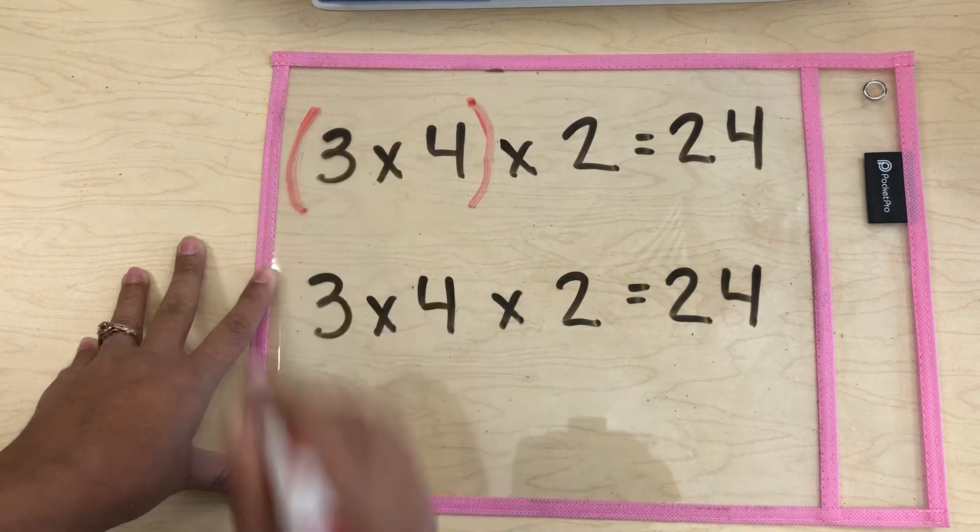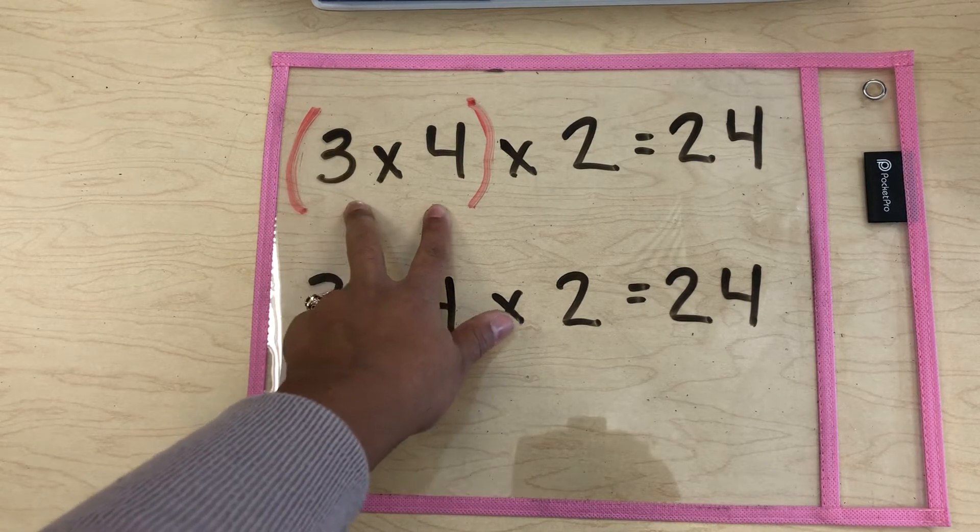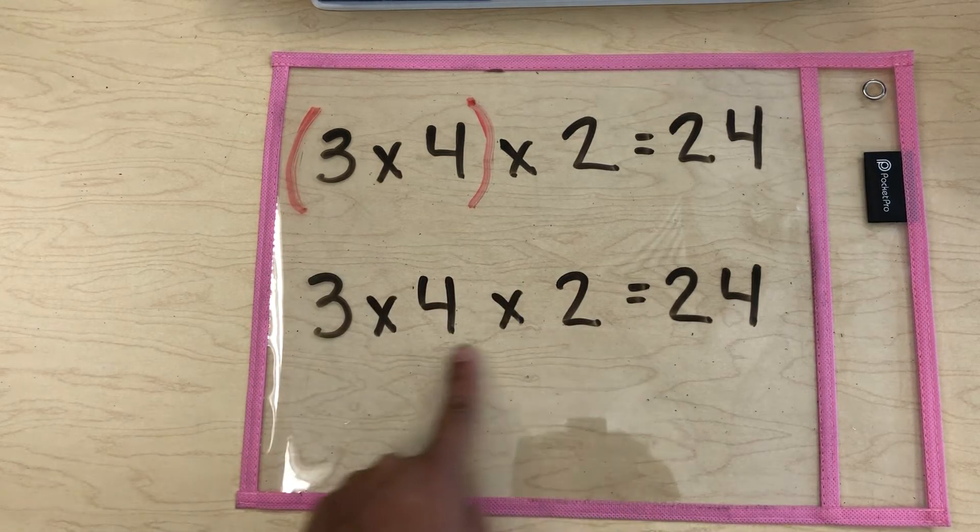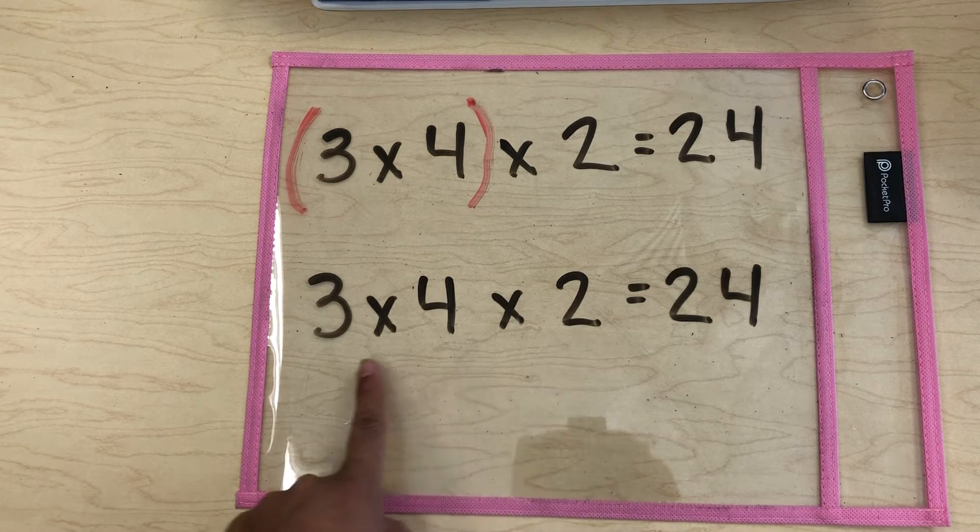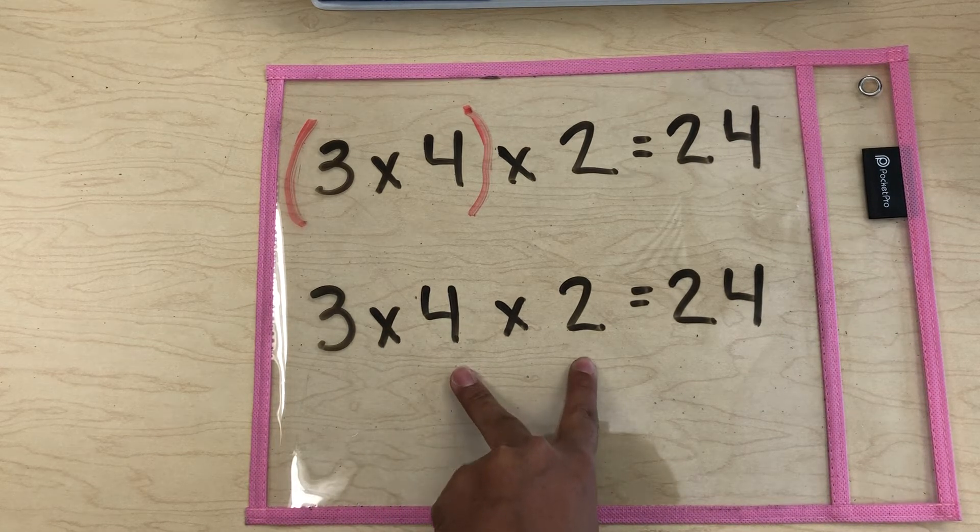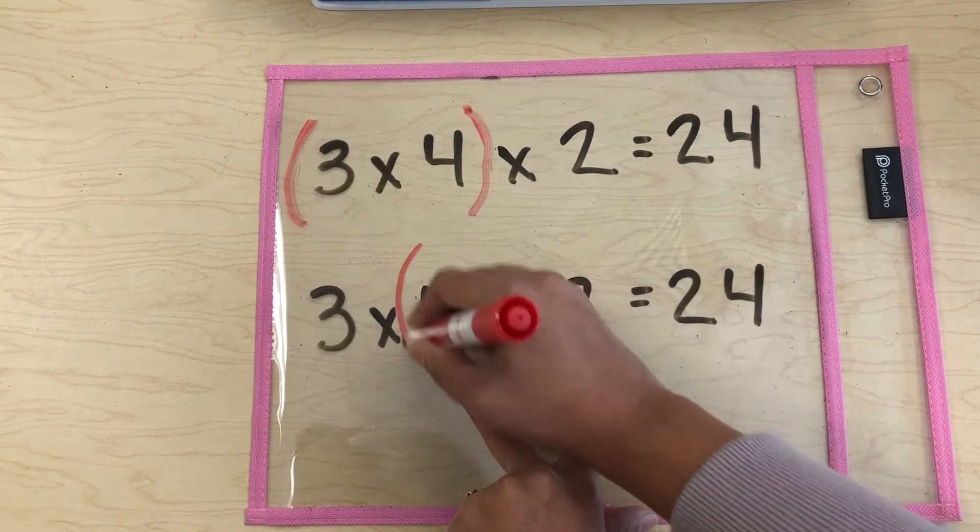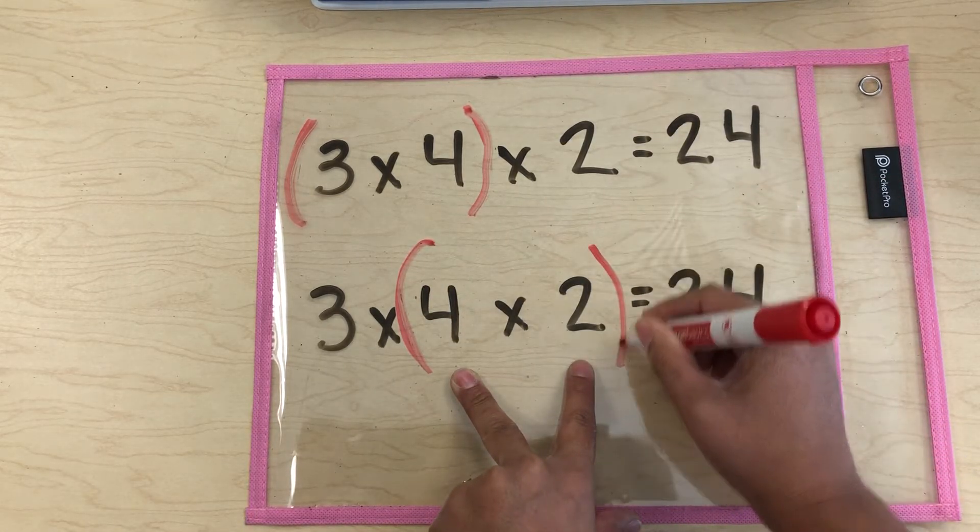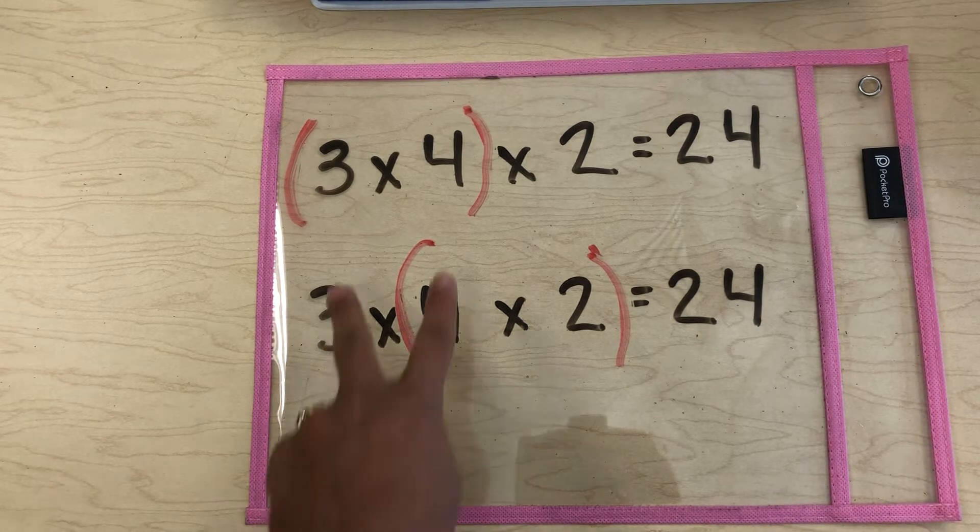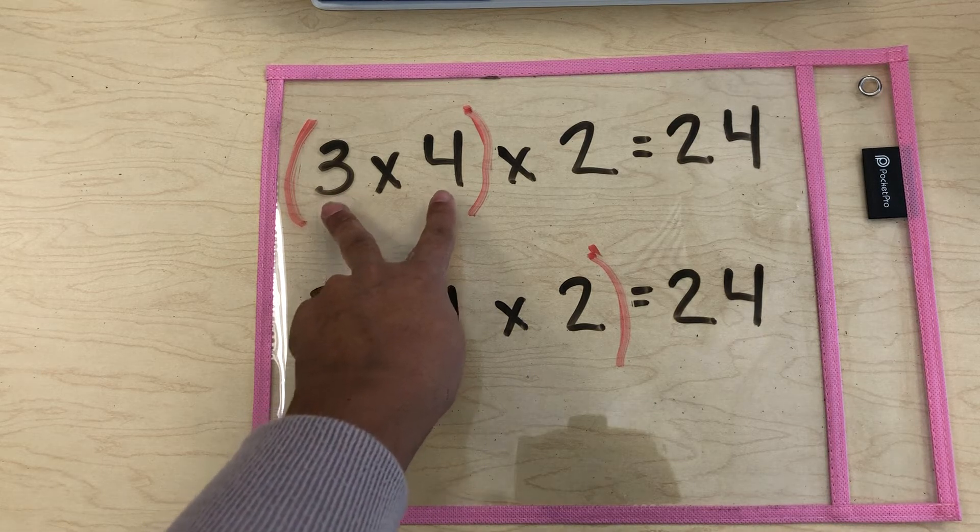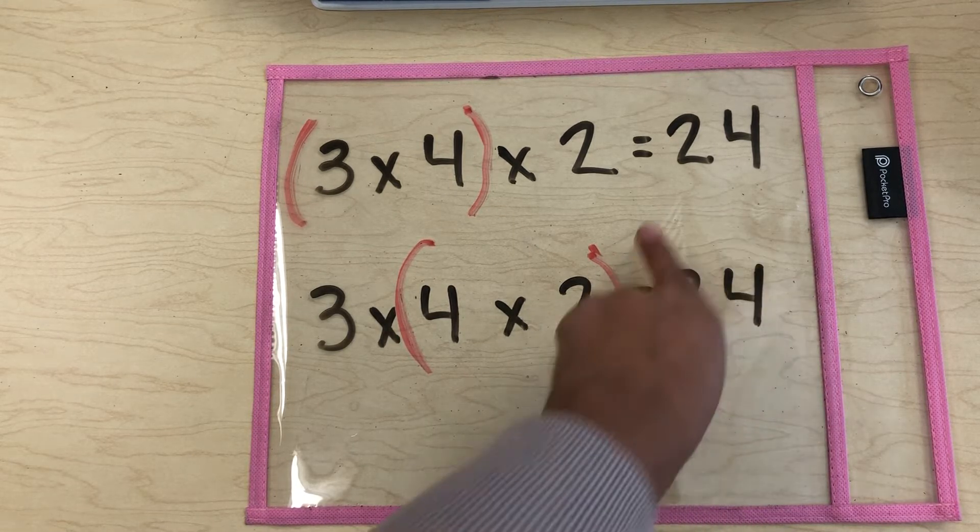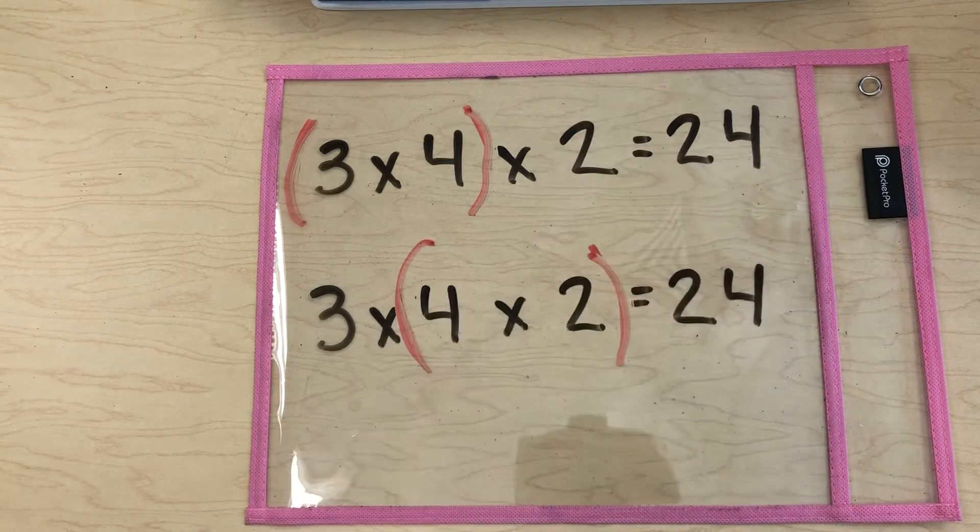So I'm going to go ahead and put these around 3 times 4 here. And then we're going to group 2 different numbers in our multiplication problem here. So we already grouped 3 times 4. So I'm going to scoot it on over and put my parentheses around 4 times 2. Now remember in our definition it said we can group the factors in two different ways and we still should get the same product or answer. Okay, so let's see if we do.